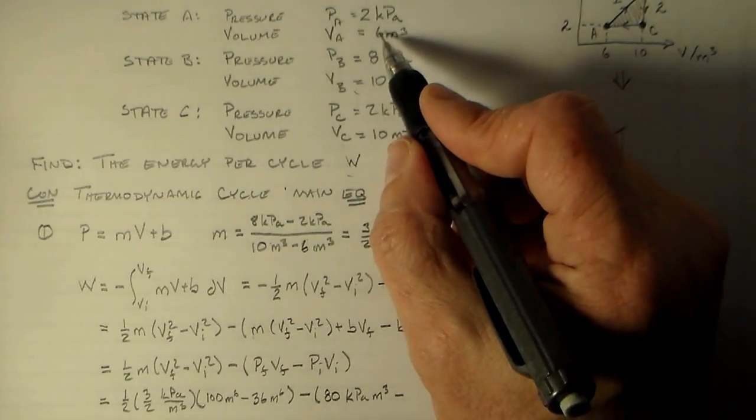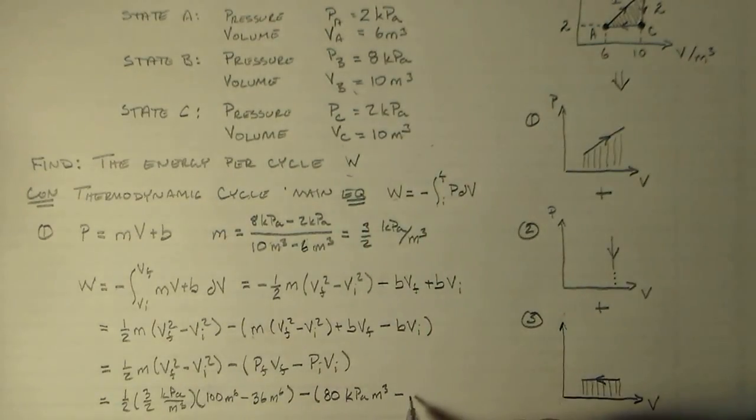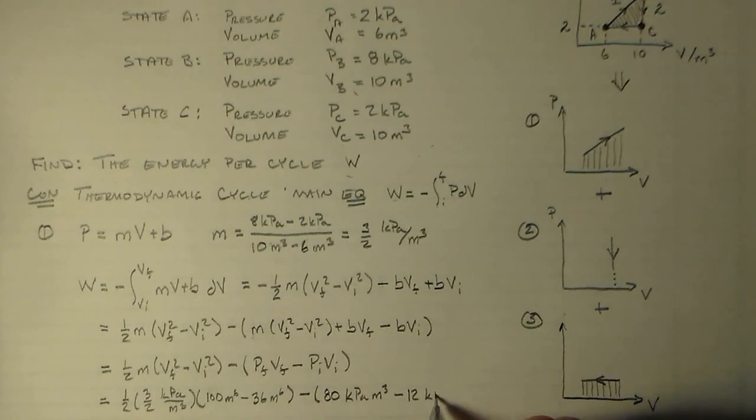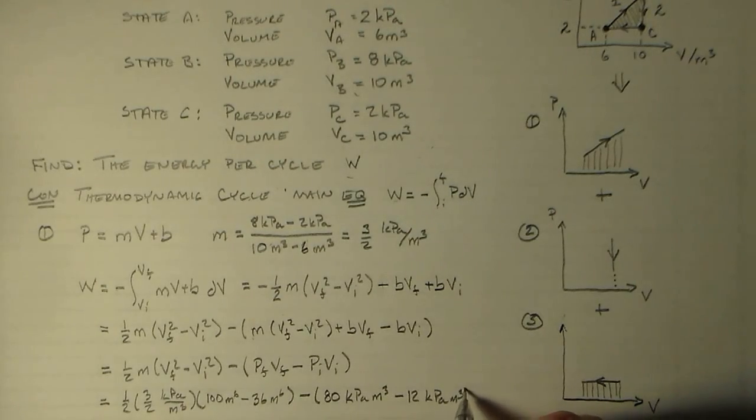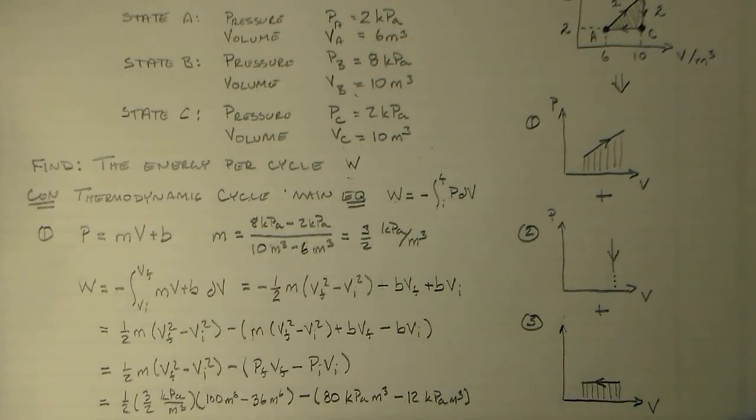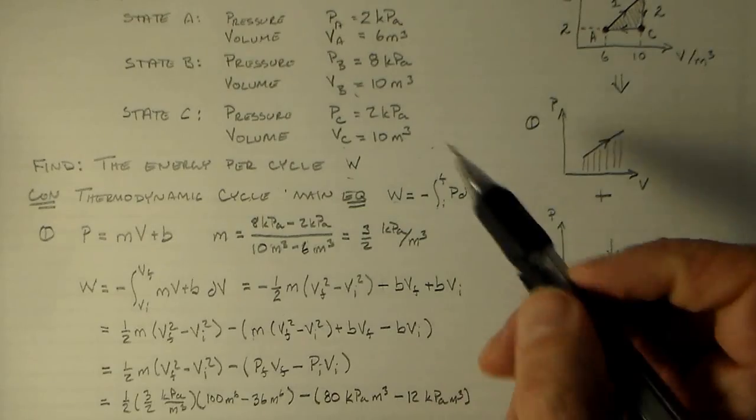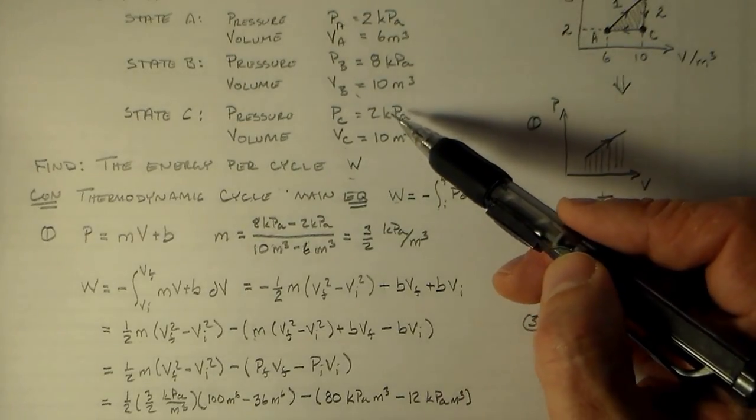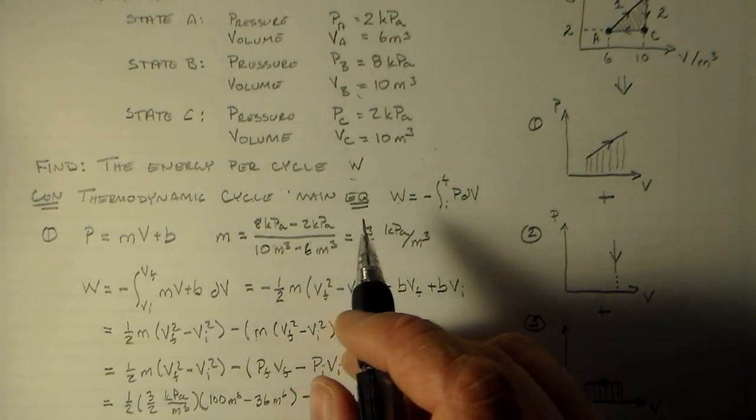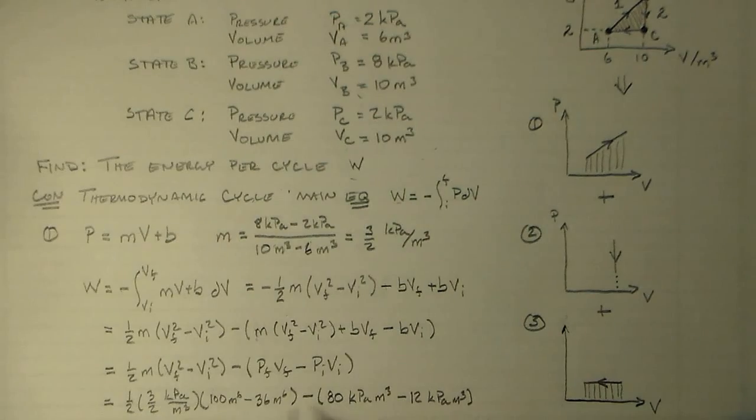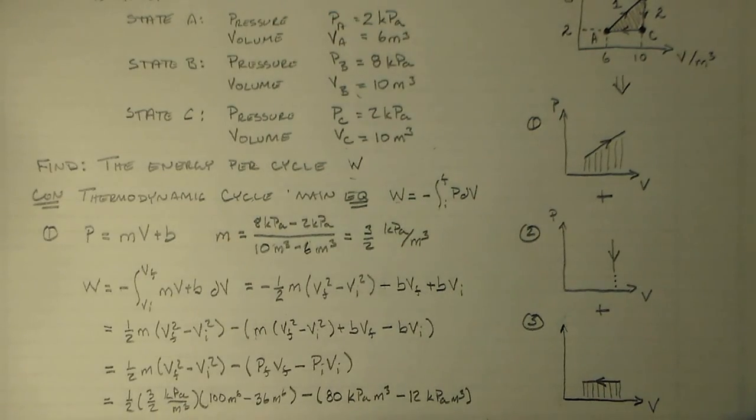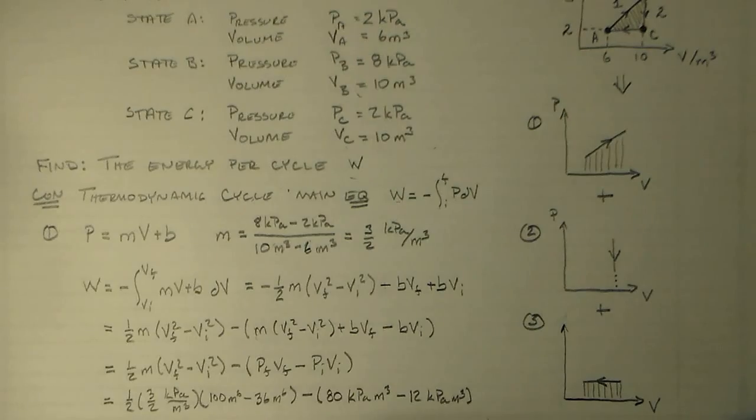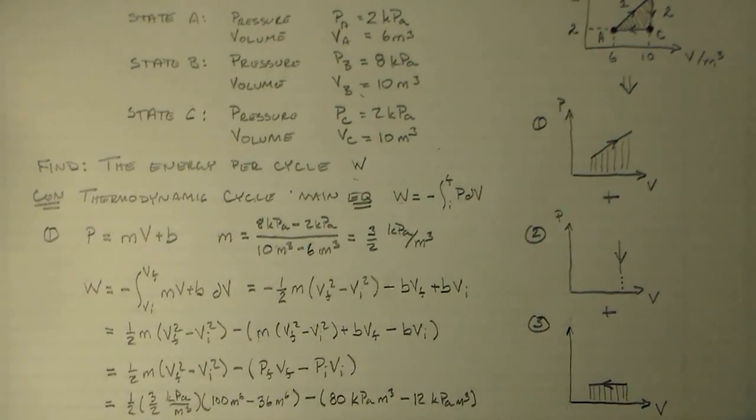Minus 2 by 6, so 12 kilopascals times meters cubed, and that is all equal to minus 20 kilojoules. Kilopascals times meters cubed is a kilojoule.